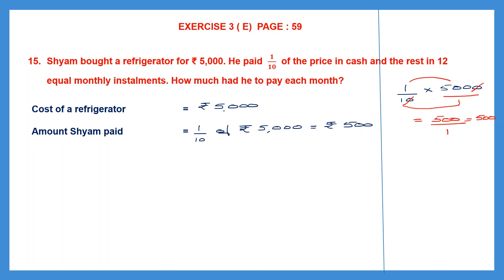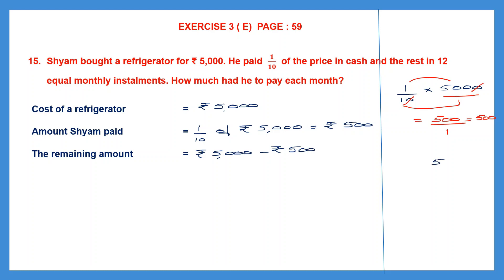The cost of the refrigerator is 5000 rupees and the amount Shyam paid is 500 rupees. To find the remaining amount — which he paid in installments — we subtract: 5000 minus 500. Borrowing where needed, 10 minus 5 is 5, giving us 4500. The remaining amount is 4500 rupees.